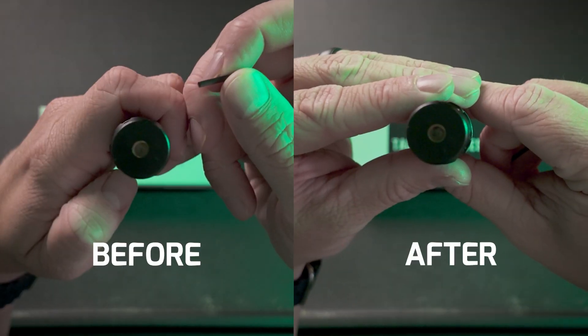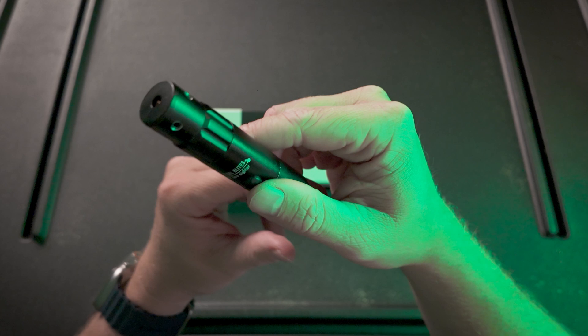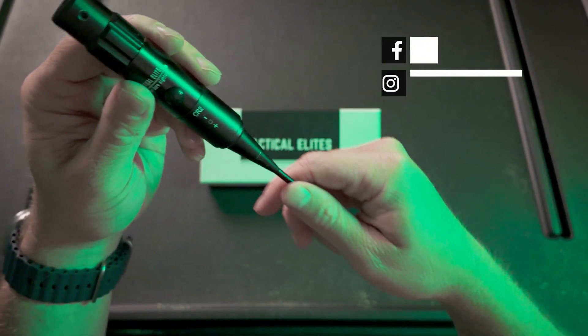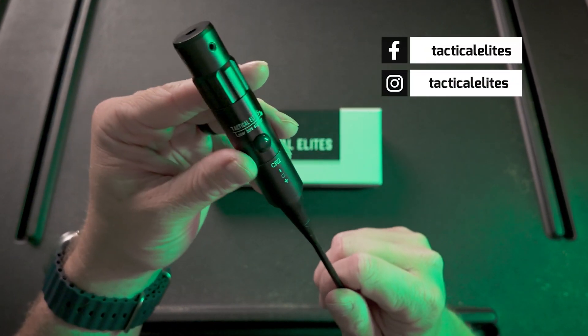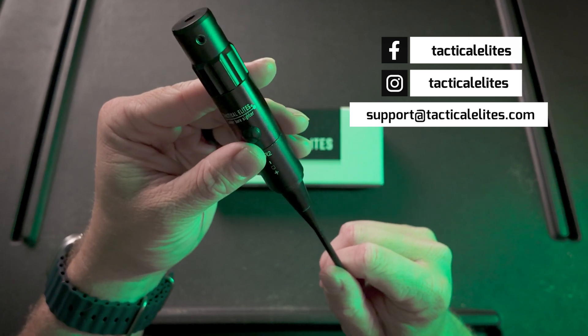Repeat these steps until it looks centered in the SightRite Boresighter. And that's it. If you have any questions, reach out to us on Facebook or Instagram at TacticalElites or email us at support at TacticalElites.com.